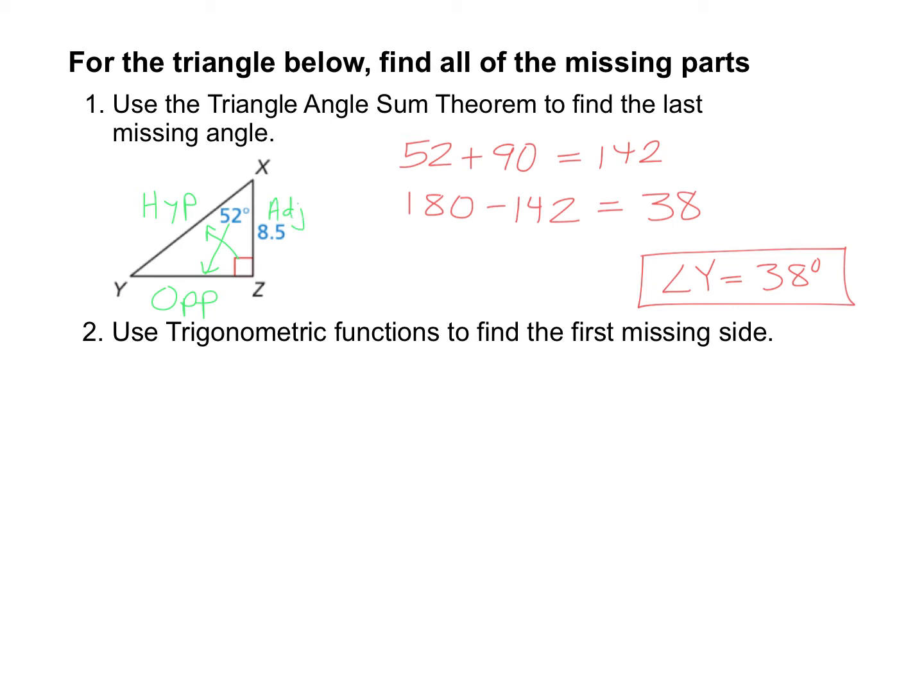If we start with side XY, you can see that that's the hypotenuse. So we have the hypotenuse, and we also have adjacent. We don't know the opposite, so we want to use the trig function that uses both adjacent and hypotenuse at the same time. That's the CAH in SOH CAH TOA, which means we'll use cosine.